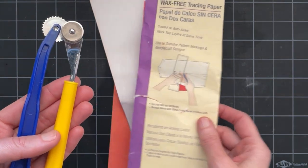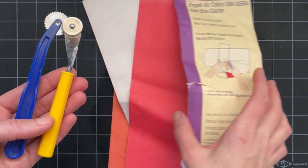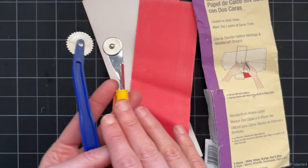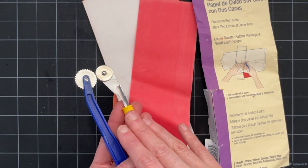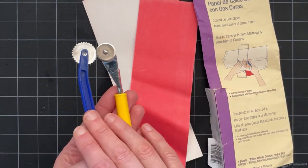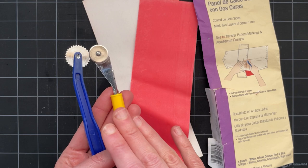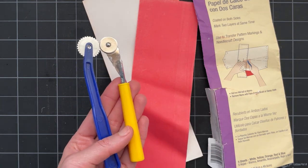These tools are used with transfer paper and there are some convenient things about using these tools. I think they are especially great for marking darts and I'm going to show you how to do that.